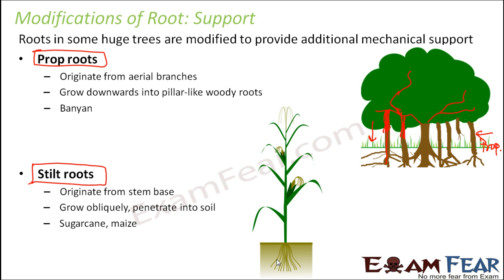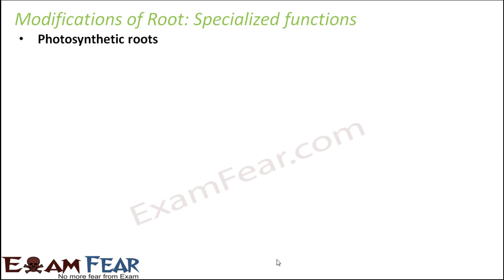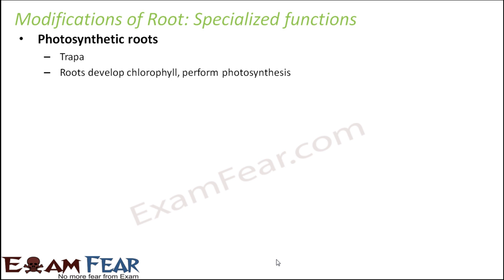Sometimes roots also perform very special functions, for example photosynthesis. We have been learning that photosynthesis is the process by which plants prepare their food in the presence of sunlight, and it is normally performed by the leaves. But in some plants, roots are modified to perform photosynthesis. One such example of a photosynthetic root is trappa, which is also called panifal or singhara in India.